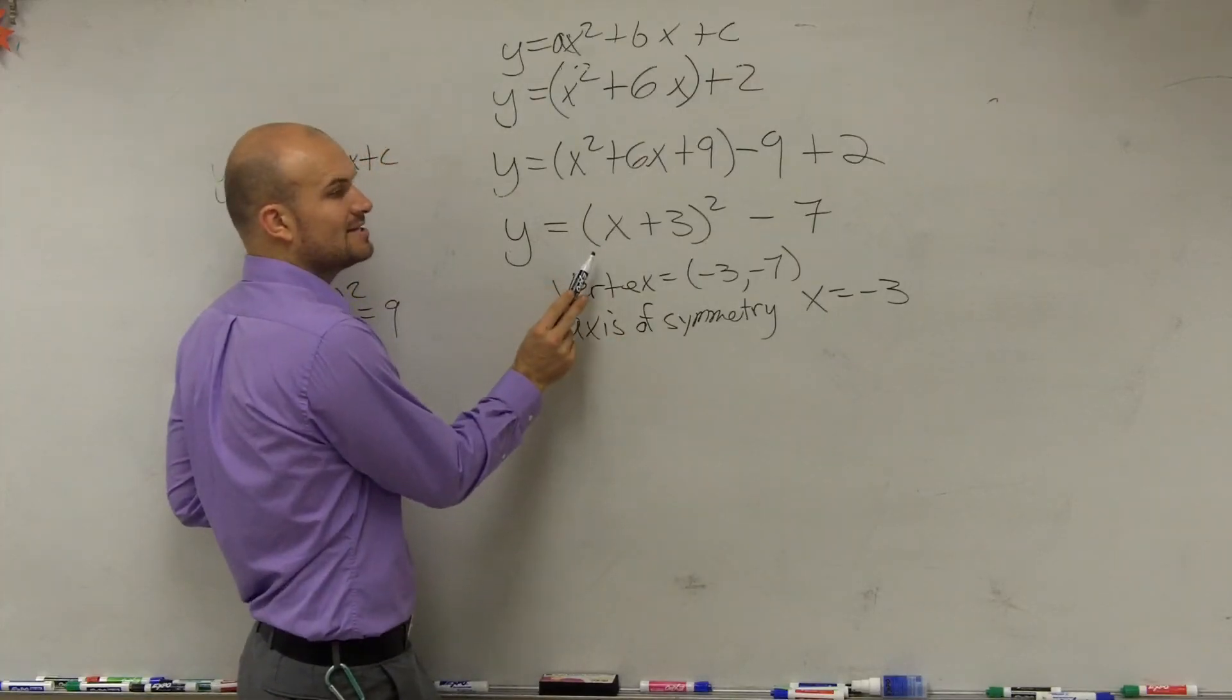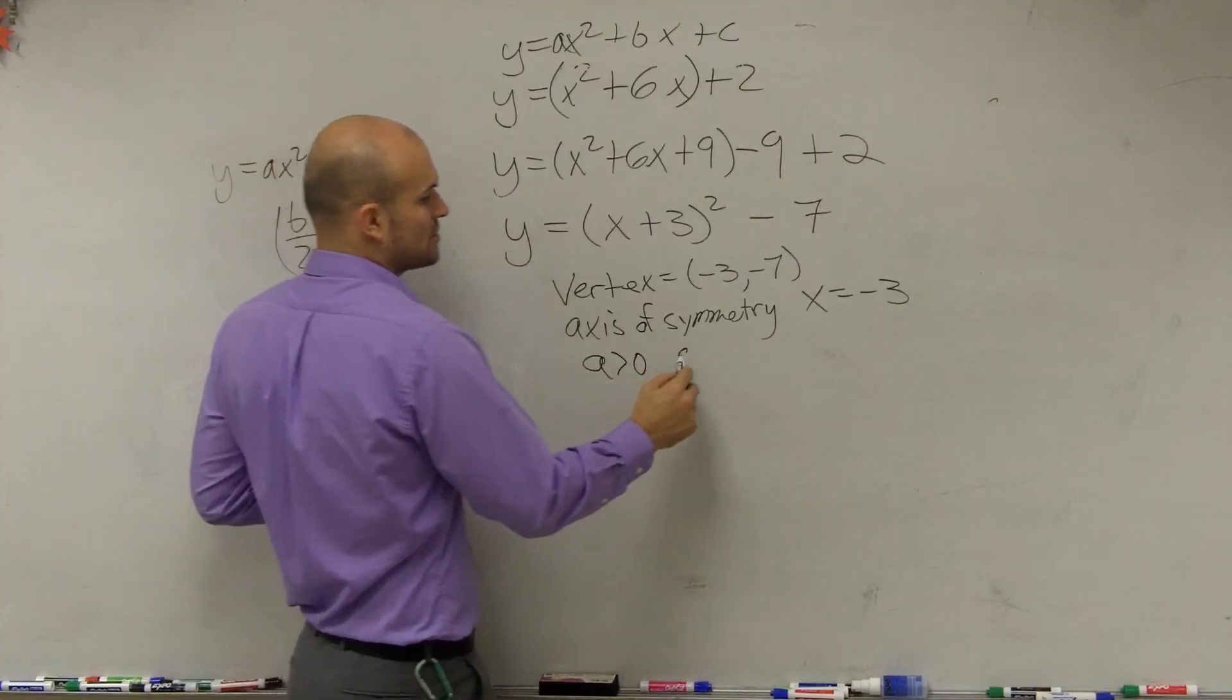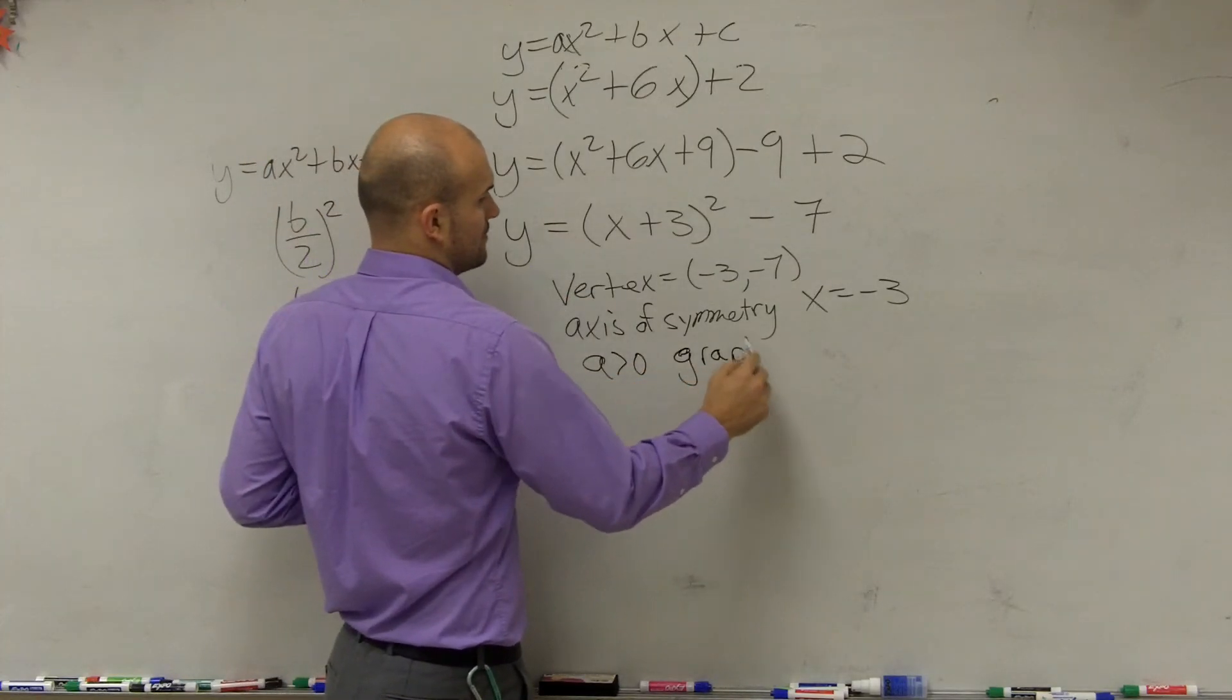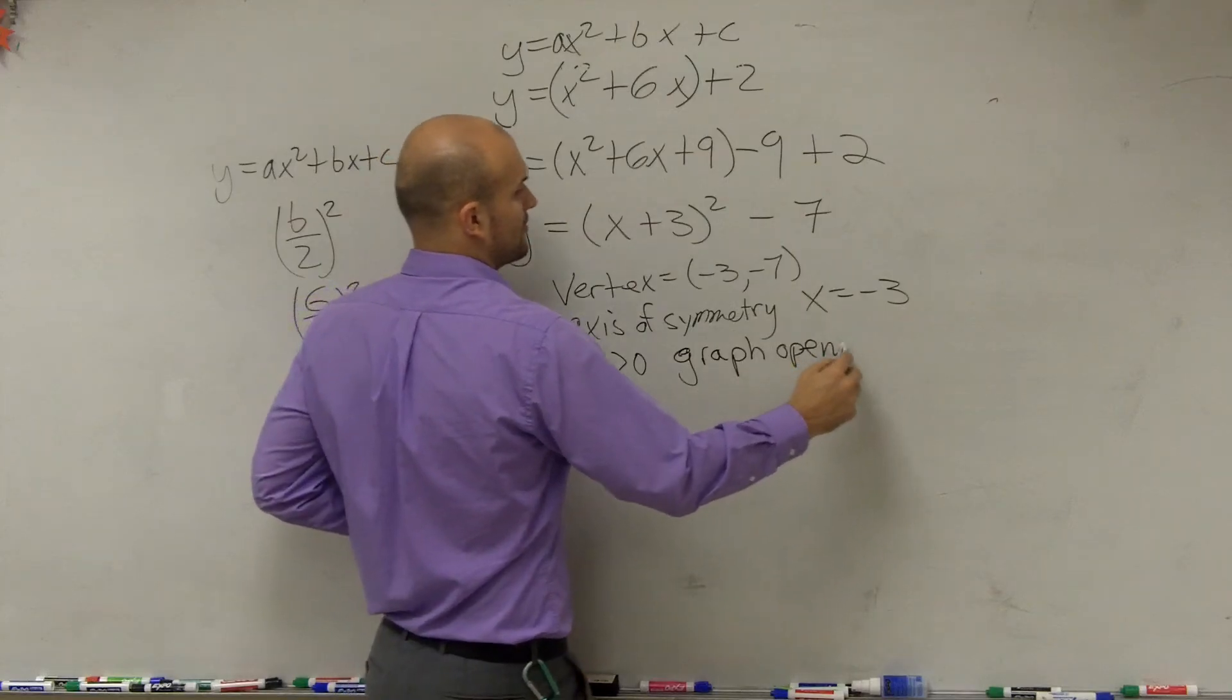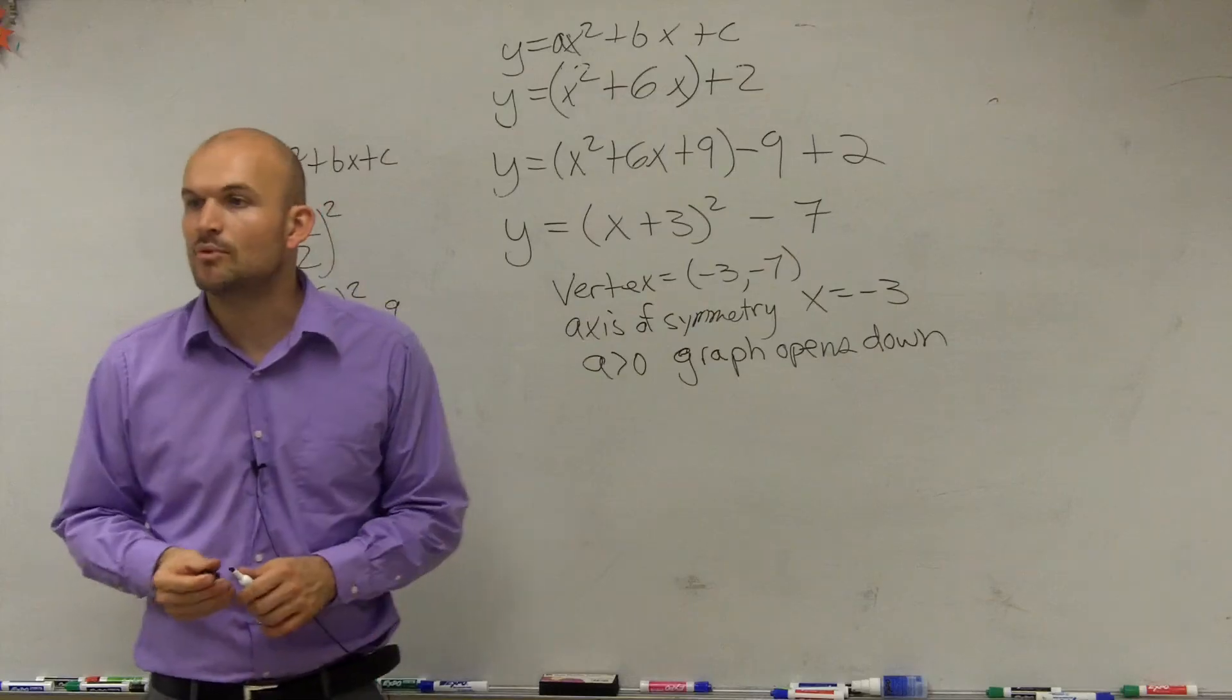And then it says our opening. Well, we look at our a. Since a is positive, our graph is going to open up. So a is greater than 0, so our graph opens up. And our vertex would be a minimum point.